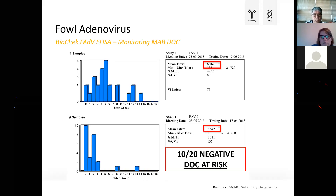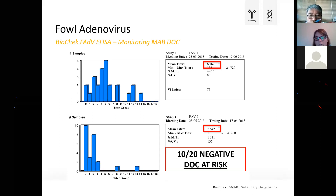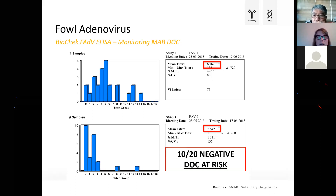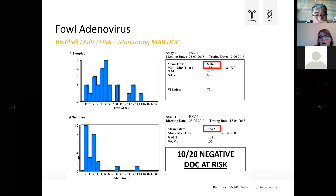Results from day-old chicks from one customer show that there can be a lot of variation, but in general, if chicks originate from a breeder flock that is well seroconverted, you will see quite high titers in the day-old chicks, and you want all day-old chicks to have a certain level of antibodies. In the second example, half of the birds show no seroconversion — this is really a flock in a high-pressure area at risk for early infection.